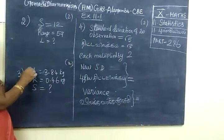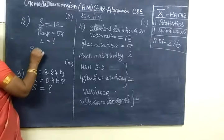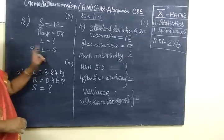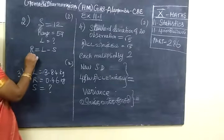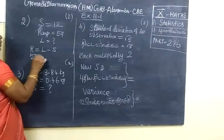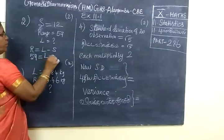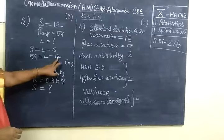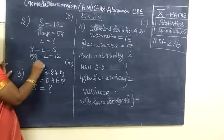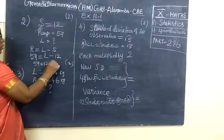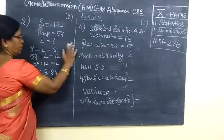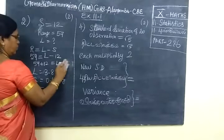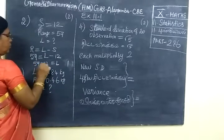What is range? We know range equals L minus S. Range equals L minus S. The range value is 59, equal to L minus S, where S equals 12. So 59 plus 12 equals L. If you add, you get 71.